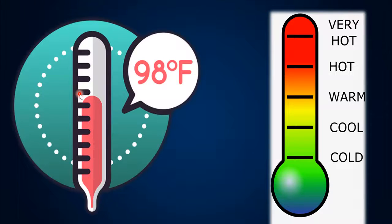What do I mean by continuous values versus classes? If I tell you the temperature in a town, I would say it is 27, 28, 23, or 24 degrees Celsius — an exact number, a continuous value. That's regression. But in classification, I would say the temperature in the town is cold, very hot, warm, or cool — these are generic terms, these are classes. Cool and hot are classes, not continuous values. So when you give classes, it is a classification problem. Based on the problem statement, you can decide whether to use linear regression or classification — it is that simple.